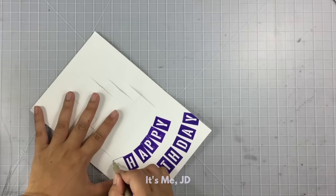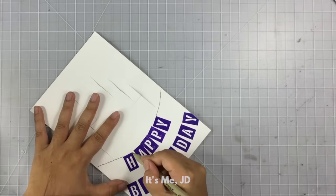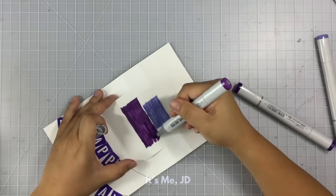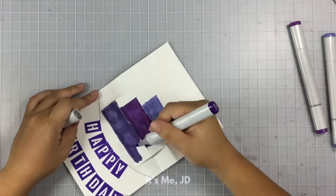Next, I will use a pen just to draw the lines for my banner to form. Then using my markers, I'm just going to color in the rest of my cake really quickly.